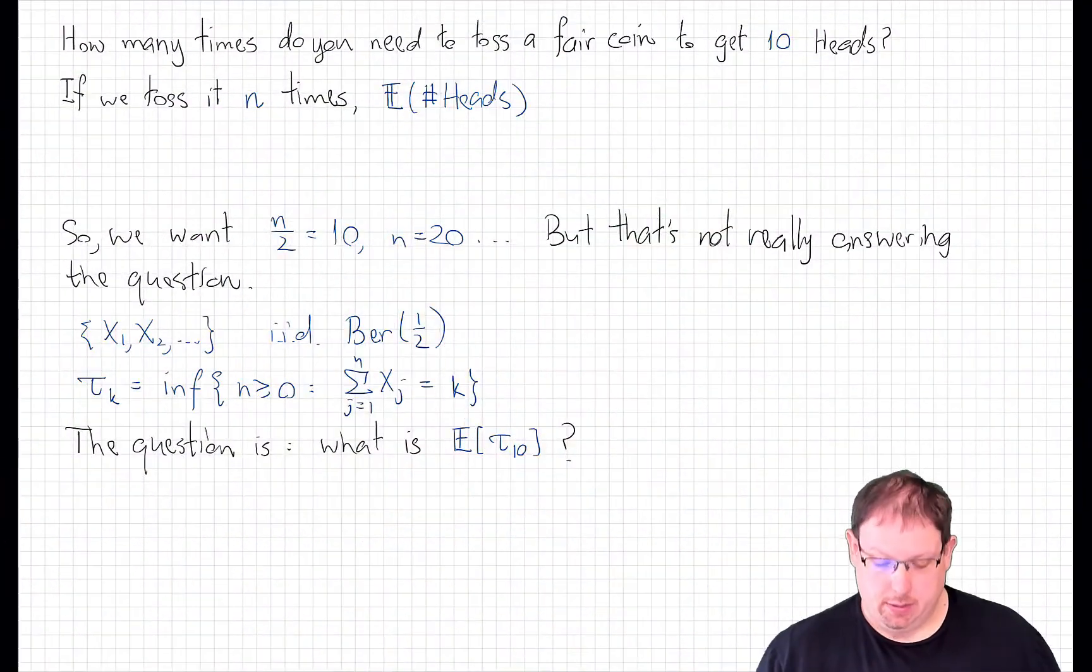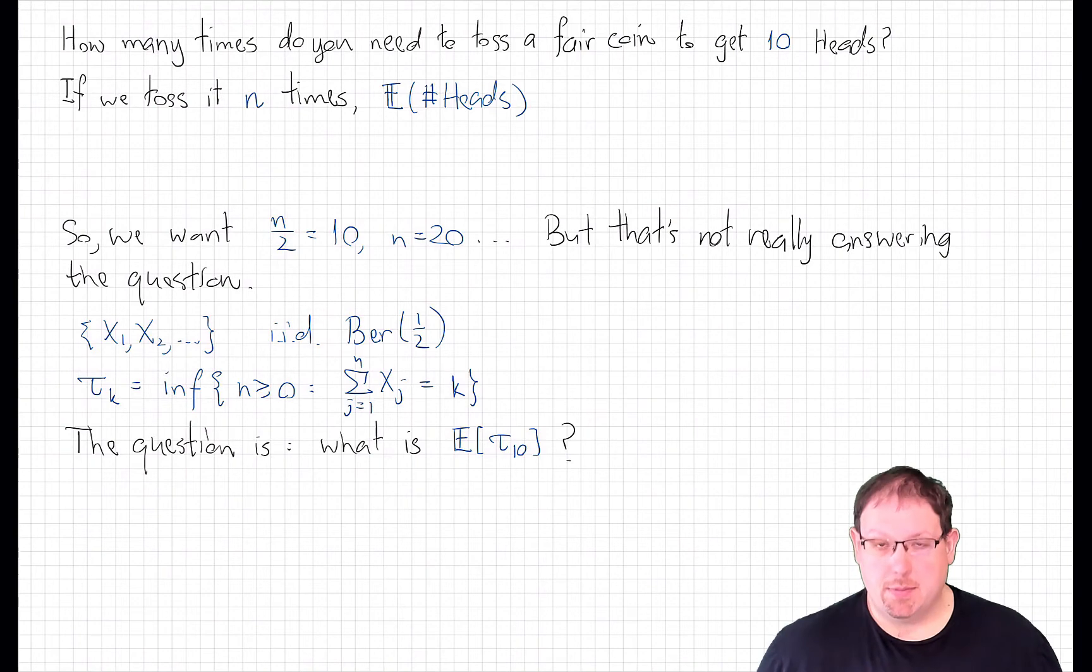How many times do you have to toss a fair coin to get 10 heads total? This is a deceptively simple-sounding question. It seems like the sort of thing that high-school-level probability should be able to answer. Let's think about it a little bit. If I toss some number n times, what's the expected number of heads?